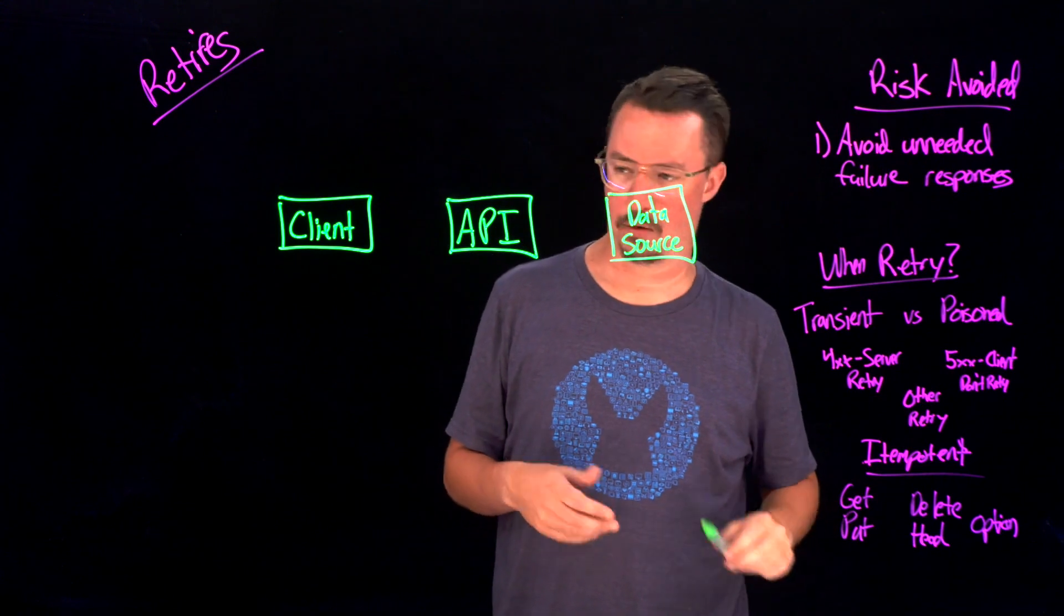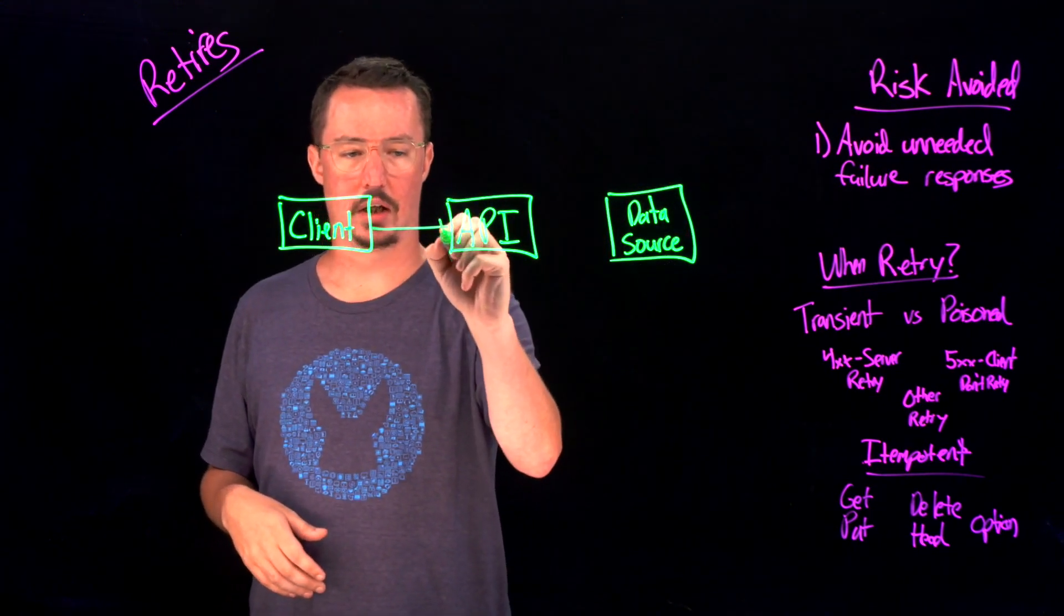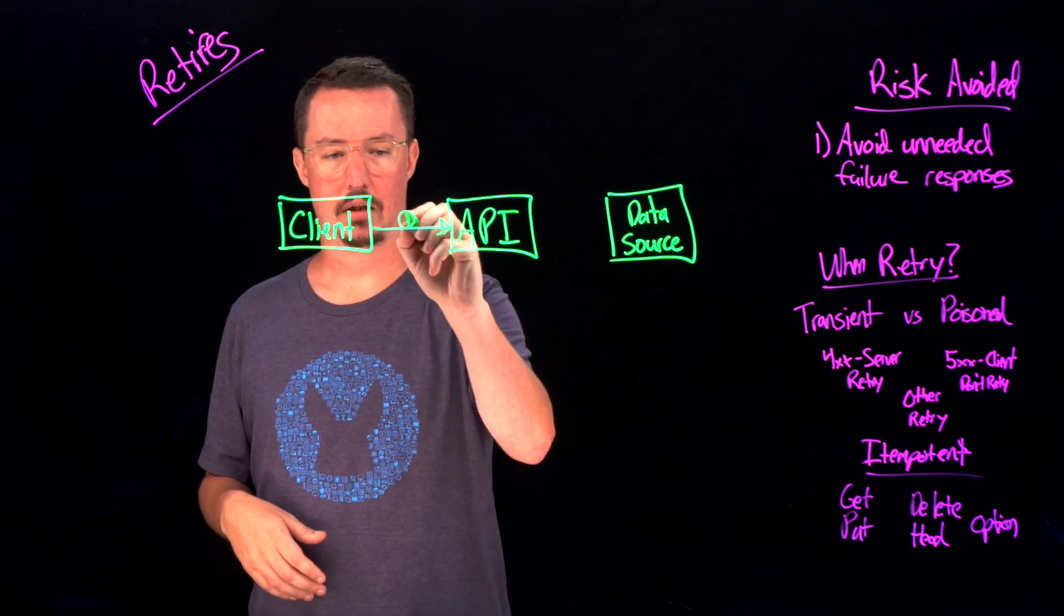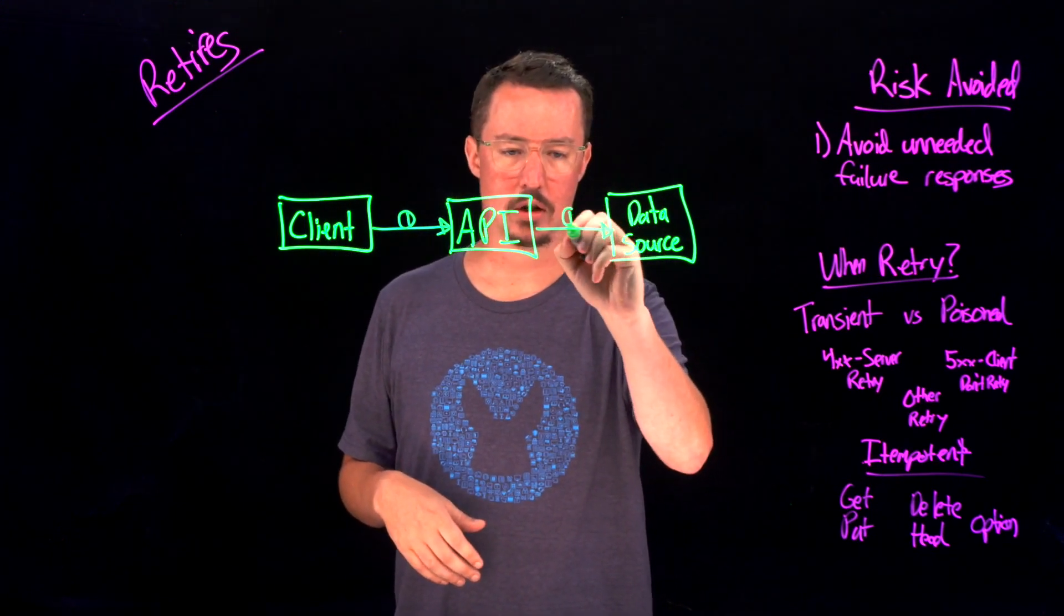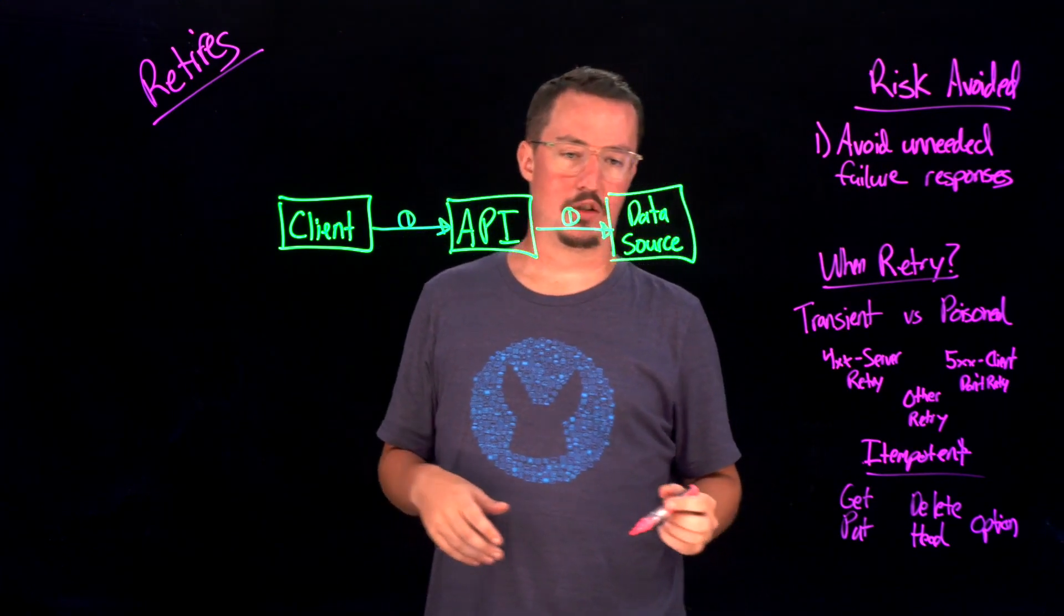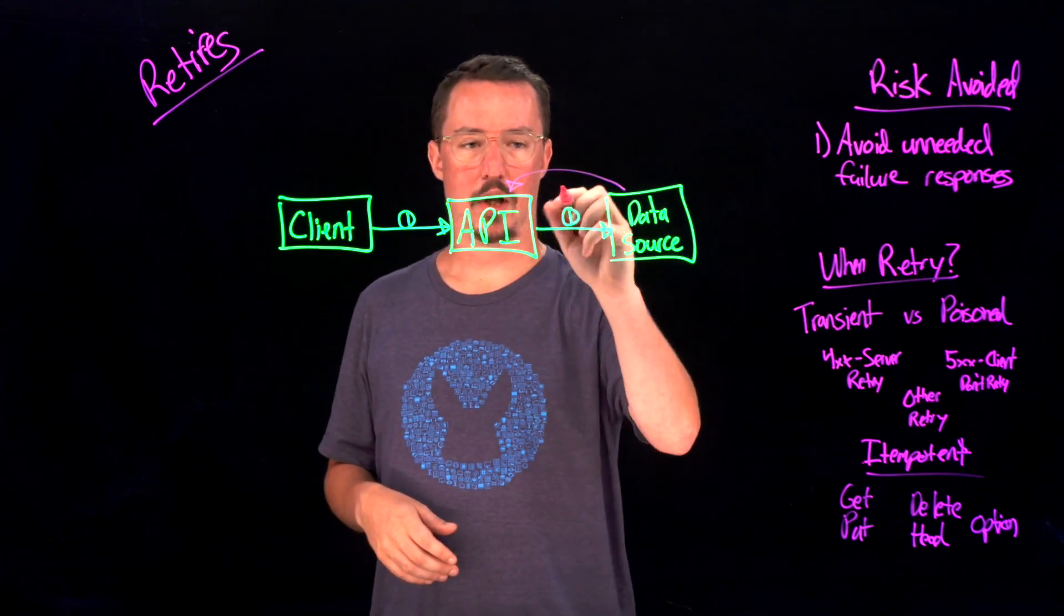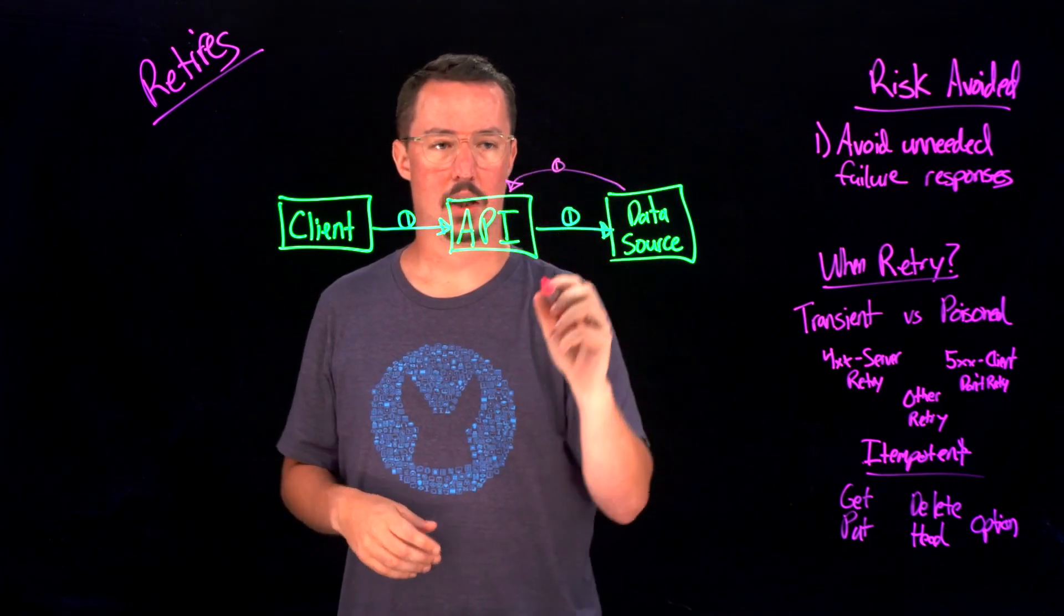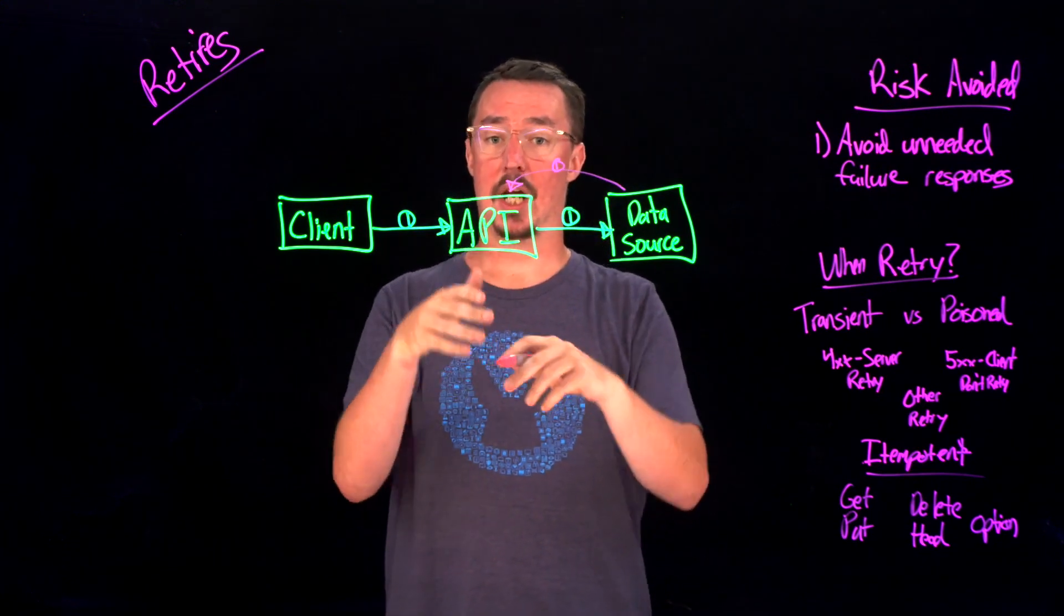So if we think about this in terms of the calls that we're going to be making, we'll start off with our first call, which is a client calling the API. The API is going to in turn call that data source. And let's say that for whatever reason, we get some kind of a transient error that comes back. So we've got a failure here.